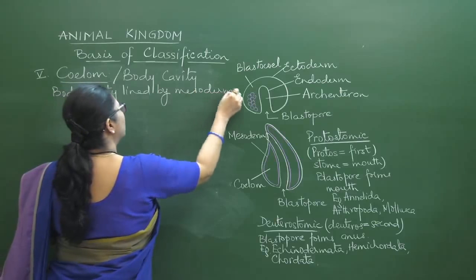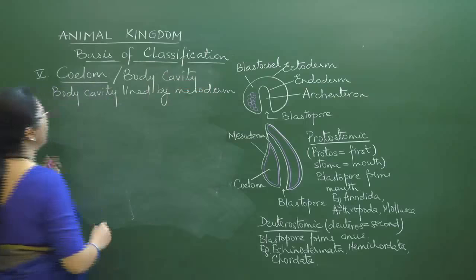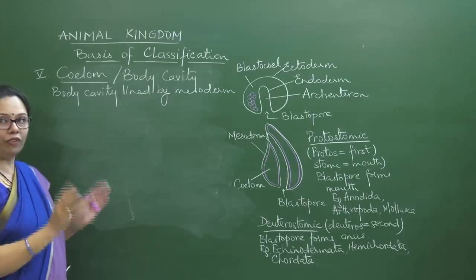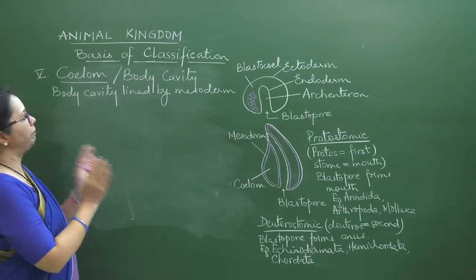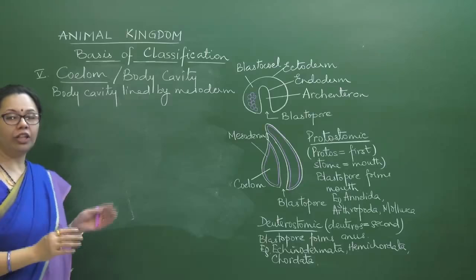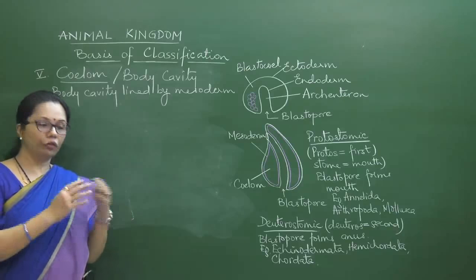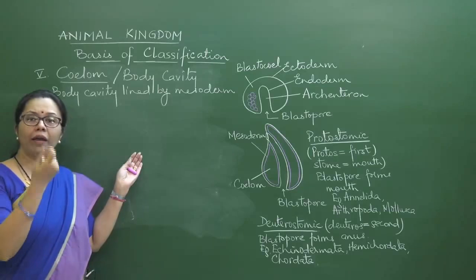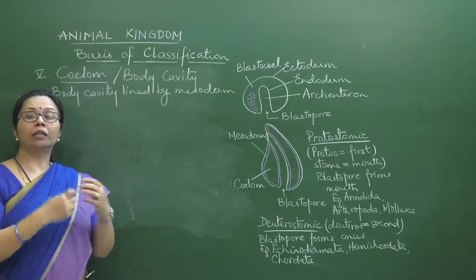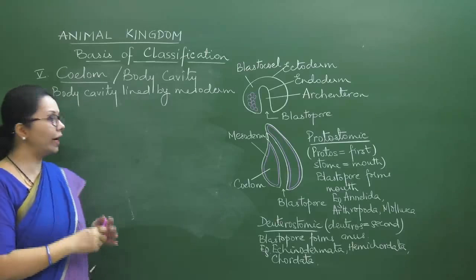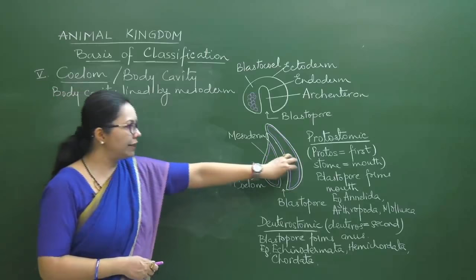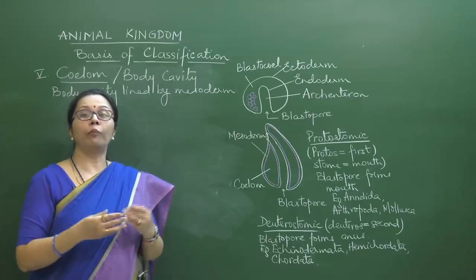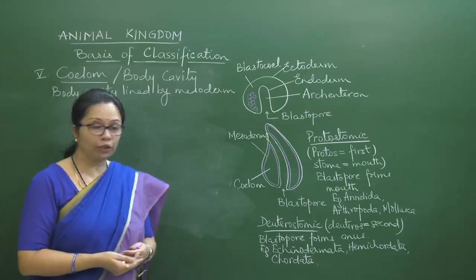Coelom, or body cavity as NCERT puts it, is specifically the body cavity lined by mesoderm. Coelom has evolutionary significance — the coelomic space allows development of numerous organ systems, providing space for complex organs. In some marine annelids, coelomic space also serves as a space for gamete collection before release.